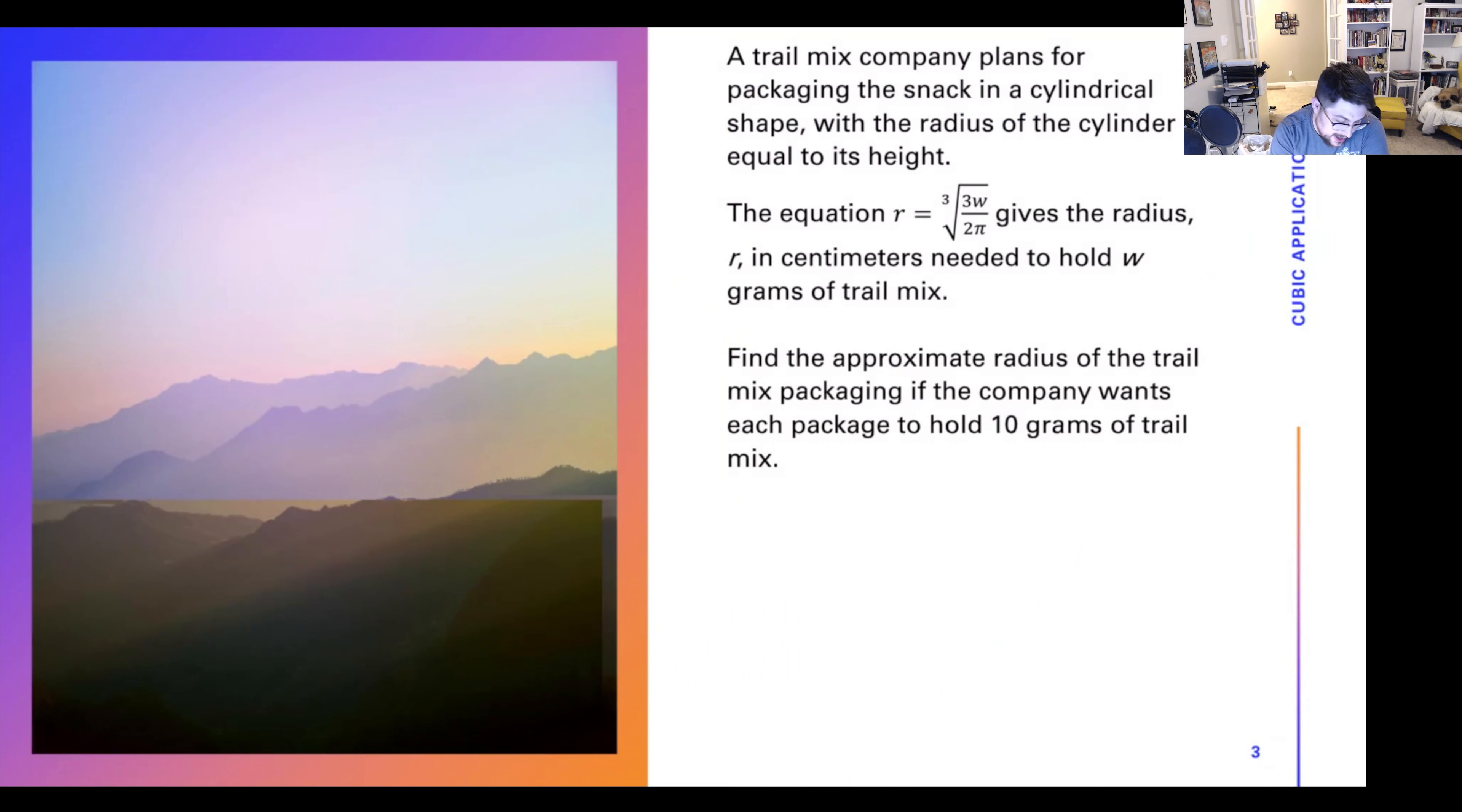We have, let's pick this thing back into pretty view. We have a trail mix company packaging the snack for a cylindrical shape with the radius of the cylinder equal to its height. So a really convoluted way of saying that we only have one variable for finding the volume. We have this equation r equals cube root of 3w over 2 pi, where we have a radius or w grams of trail mix.